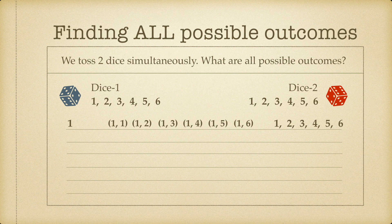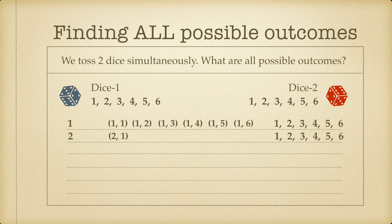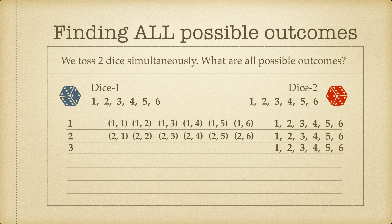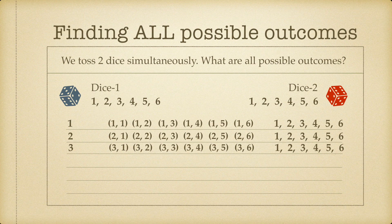Similarly, we can get the number two on dice one, giving us six outcomes for dice two: (2,1), (2,2), (2,3), (2,4), (2,5), and (2,6). When dice one shows three, we again have six outcomes: (3,1), (3,2), (3,3), (3,4), (3,5), and (3,6).